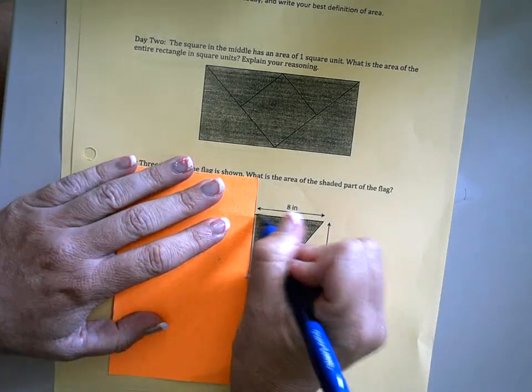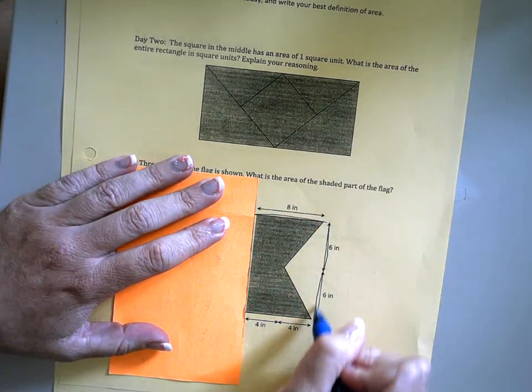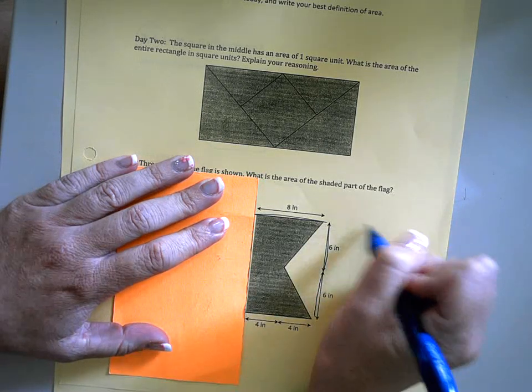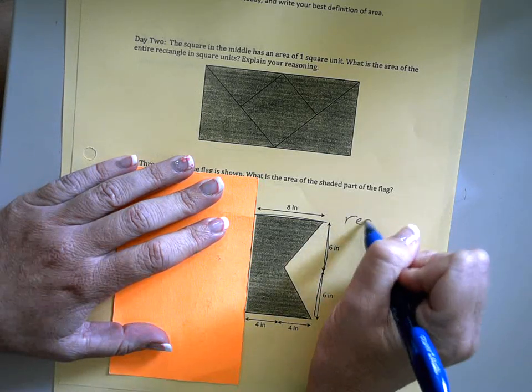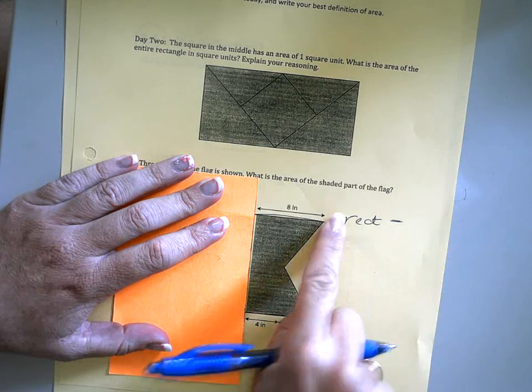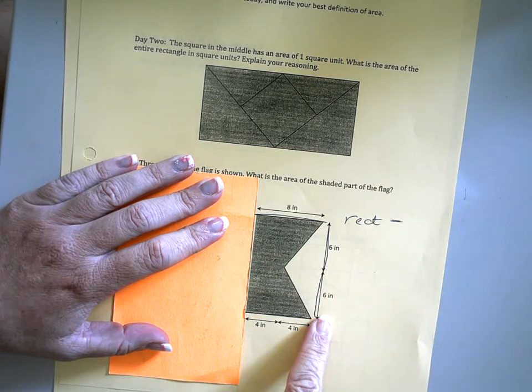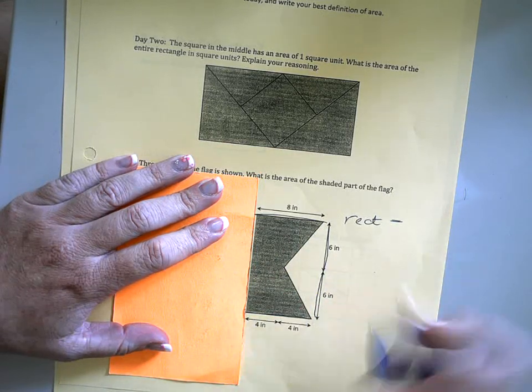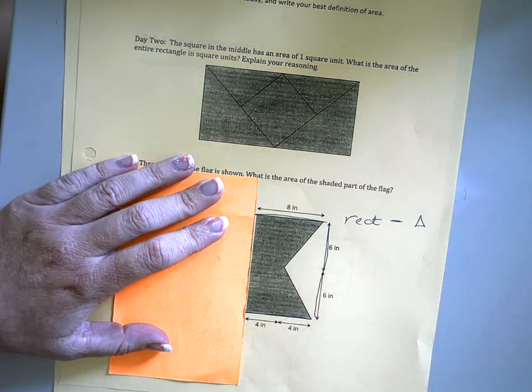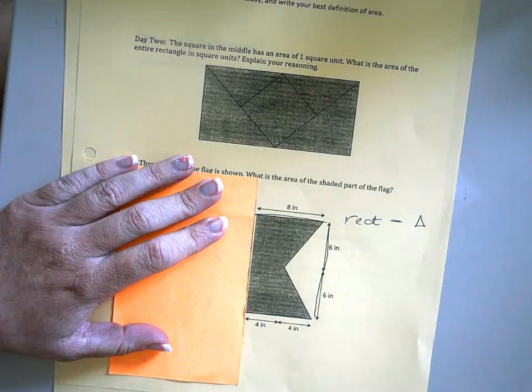So I'm starting with a rectangle. I'm gonna find that area and then I'm gonna subtract this piece that I don't need. So I'll say minus that triangle, and that's gonna give us just the shaded region.